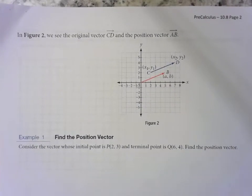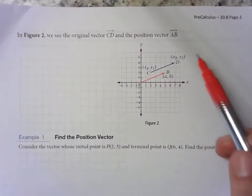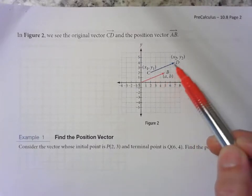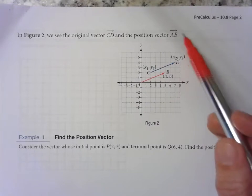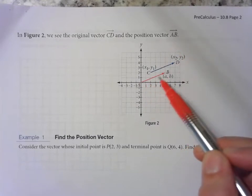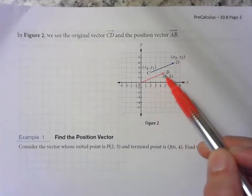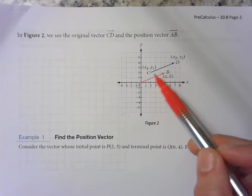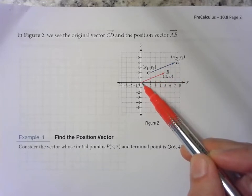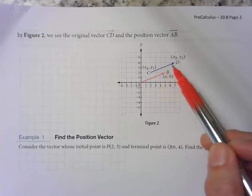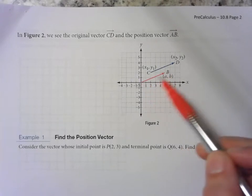So you can see in this example our original vector CD and then the position vector is AB. So it has the same length, the same direction. It just moves it down to the origin. That's the difference between the vector itself and its position vector.